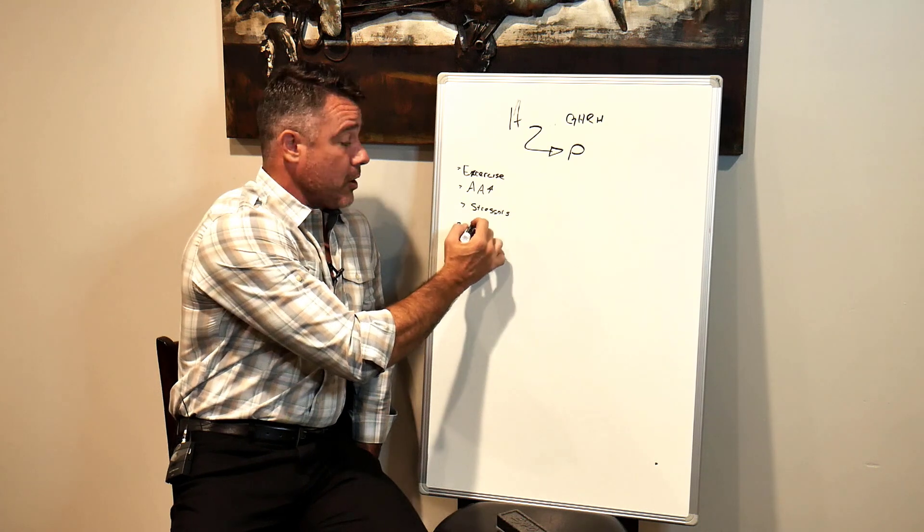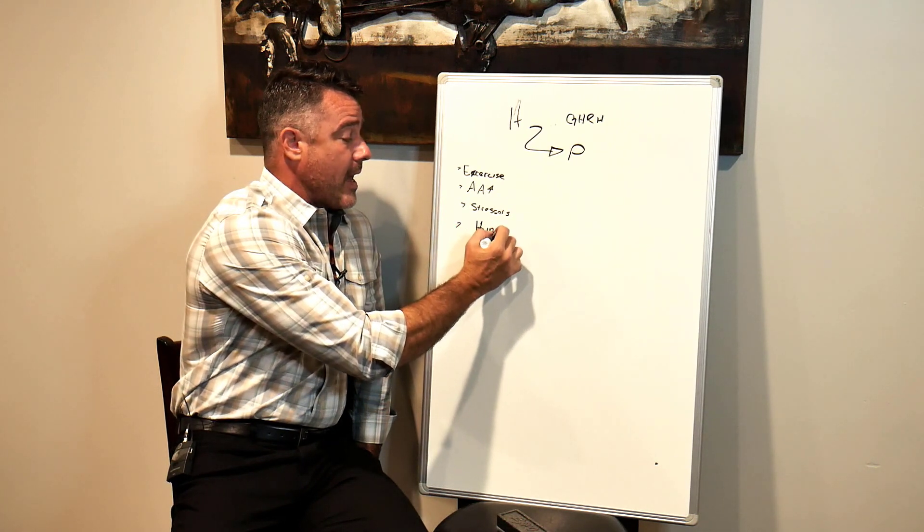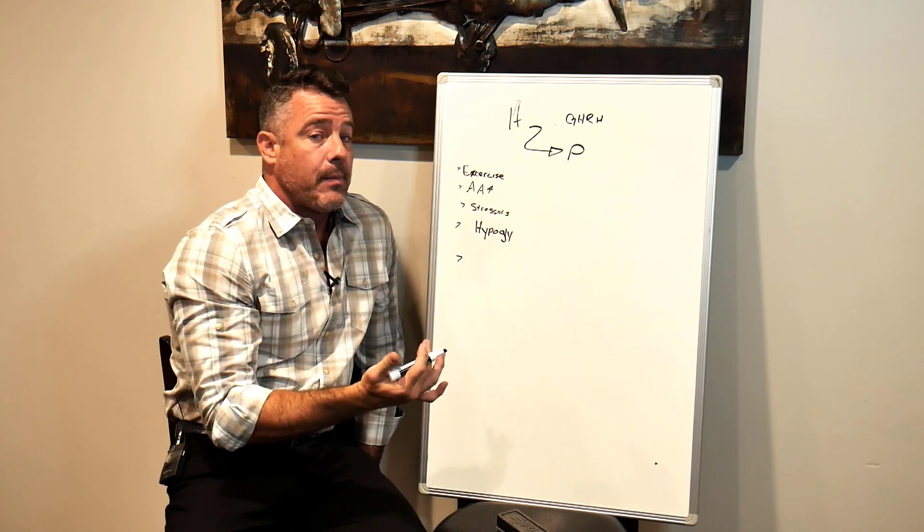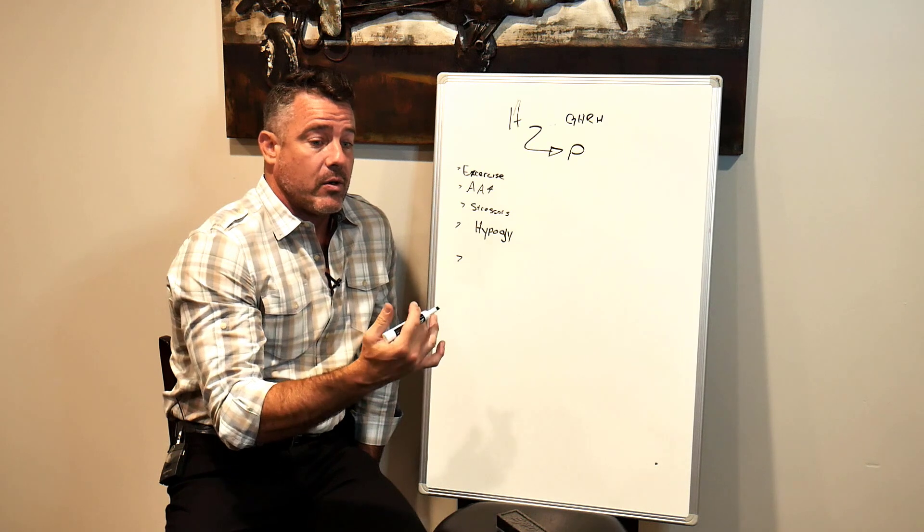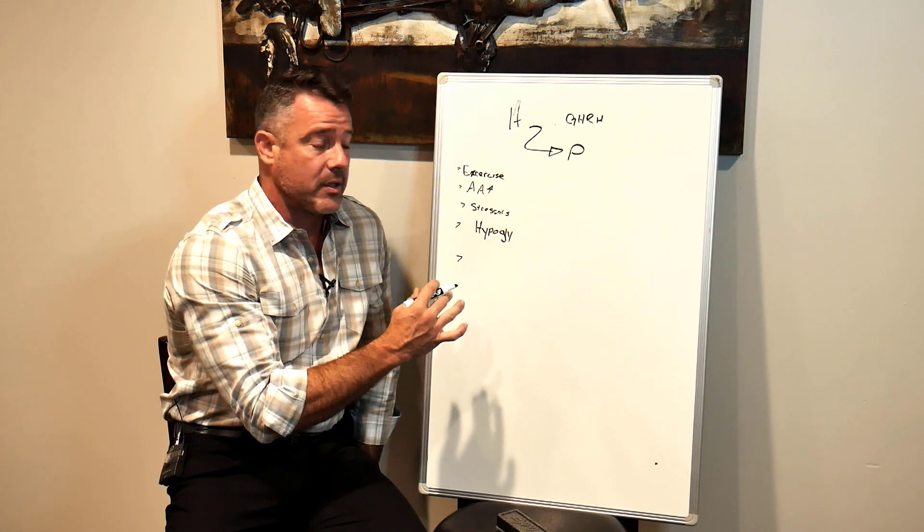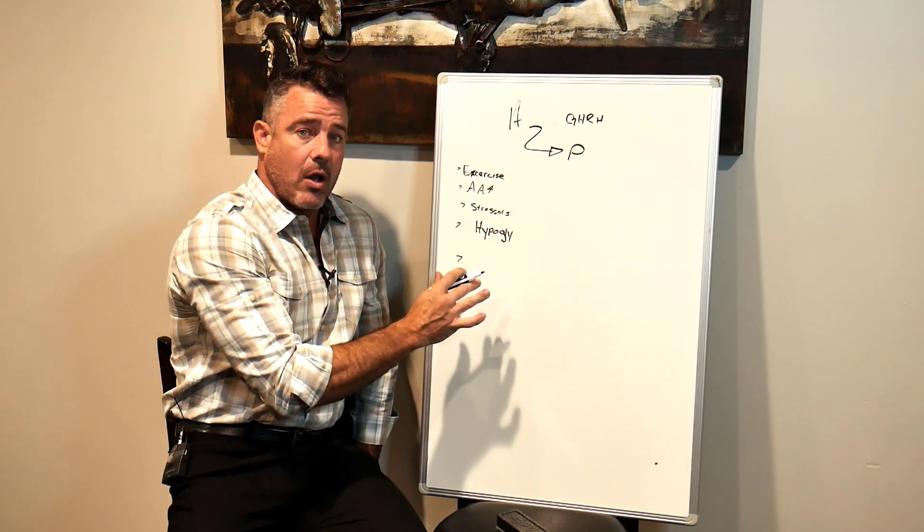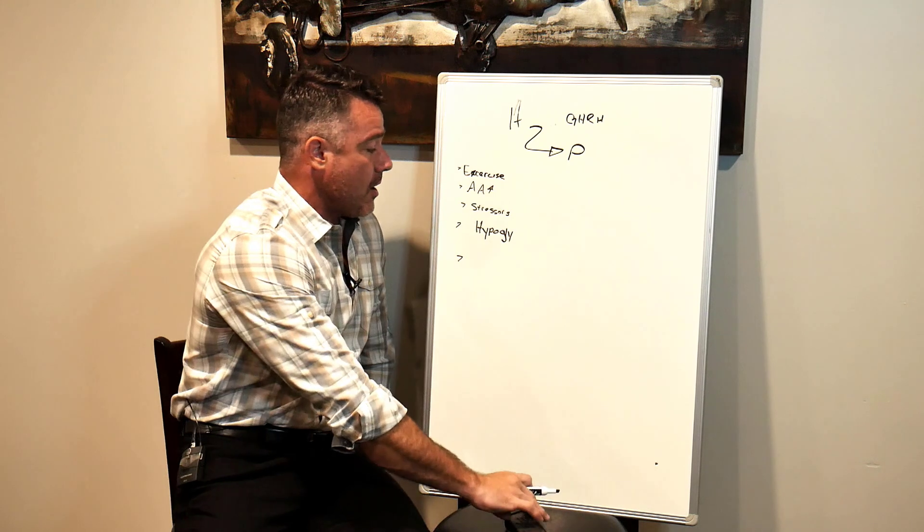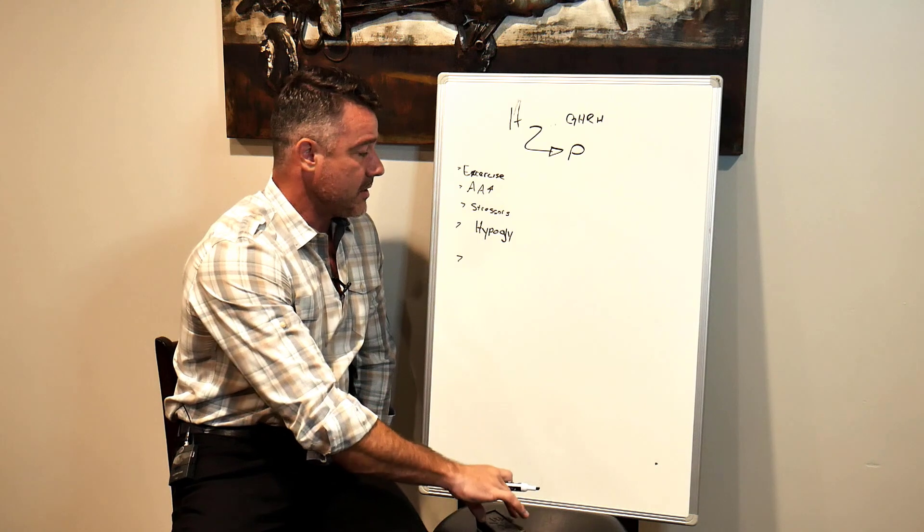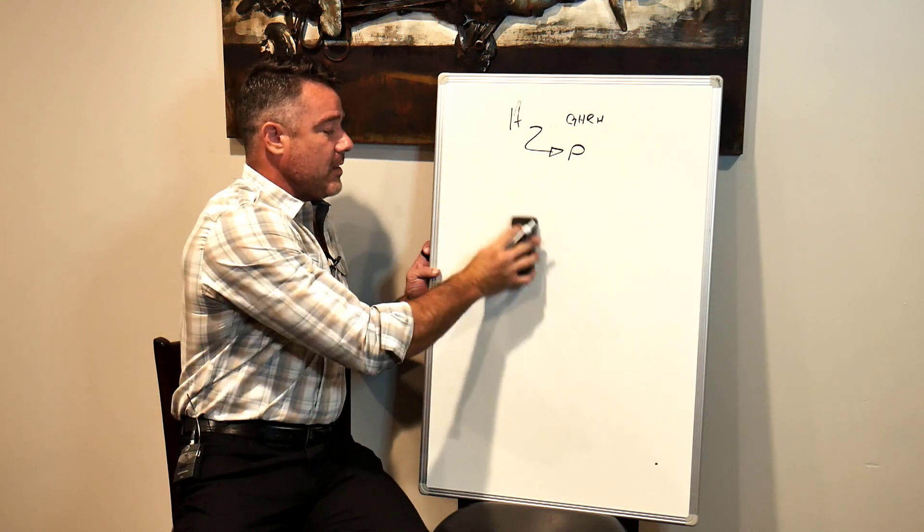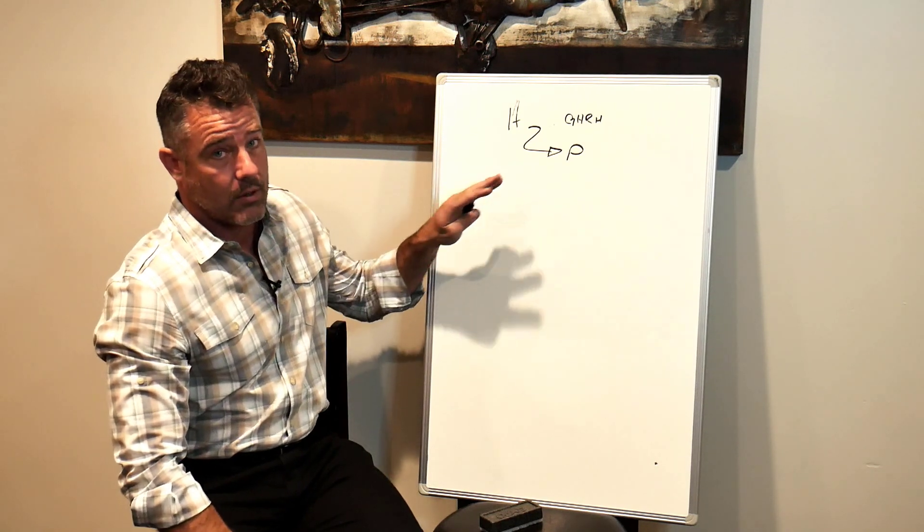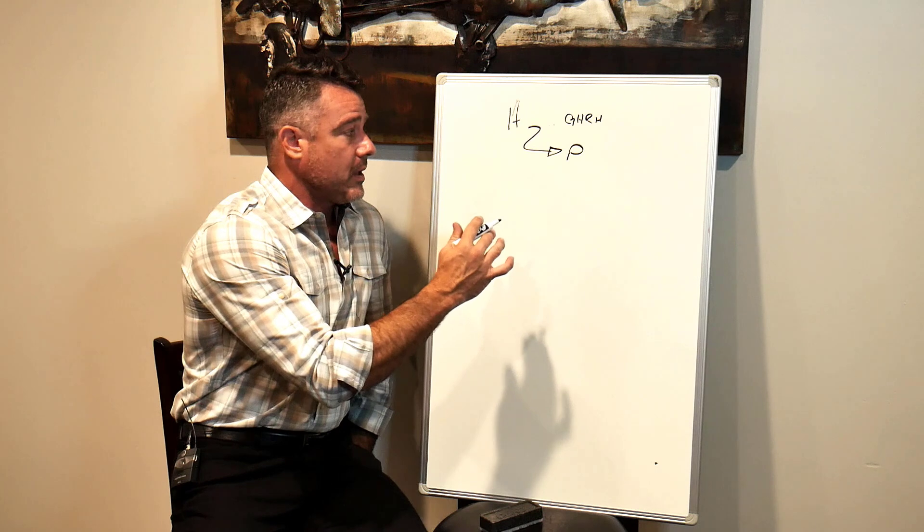Low blood sugar, so hypoglycemia, and also low lipid levels. When your triglycerides get very low, that can actually signal growth hormone production because it can kind of do something to fix all of these. And there's some sleep stages that actually increase this as well. These are things that increase growth hormone releasing hormone.